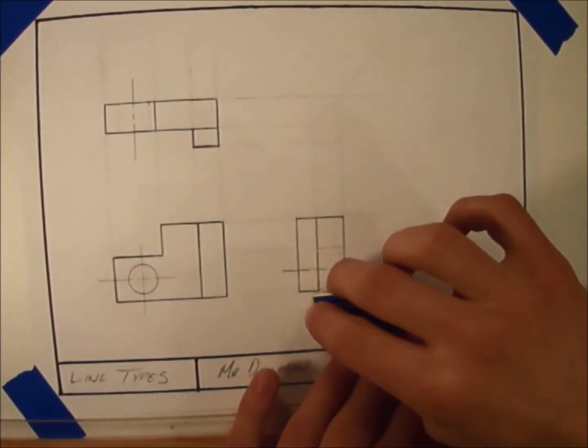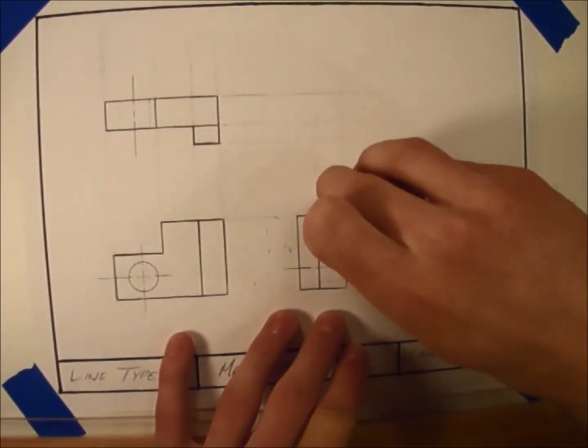We draw construction lines super lightly because we know that we will need to erase them when we're done with them.